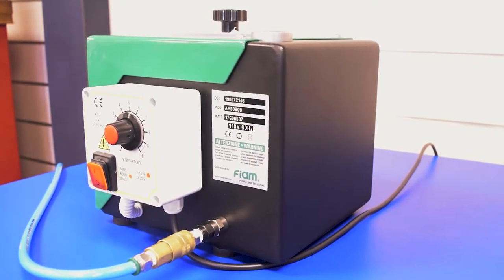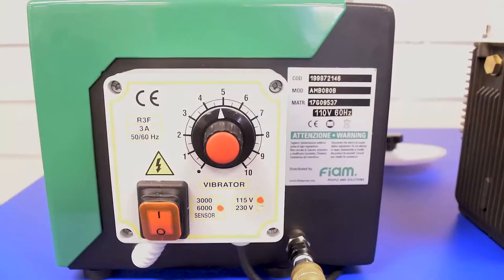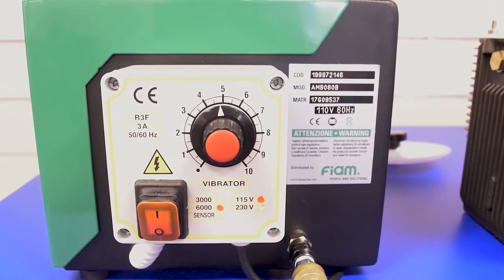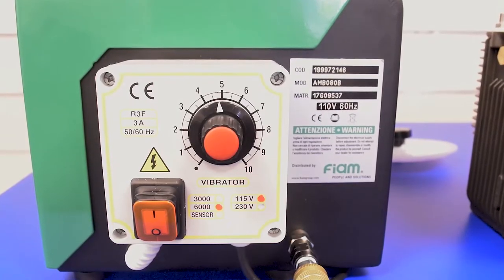Today we will be demonstrating the Fiem nut presenter. On the front face you can see there is a vibration adjustment scale ranging from 1 to 10, 10 being the most vibration.